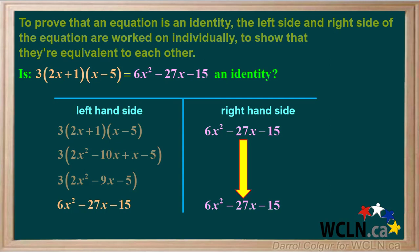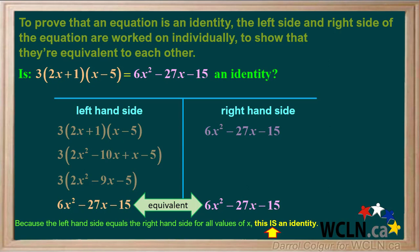On the right side, we'll bring the original expression down and rewrite it on the bottom line. We see that the expression on the left is equivalent to the expression on the right. Because the left hand side equals the right hand side for all values of x, this is proof that this is an identity.